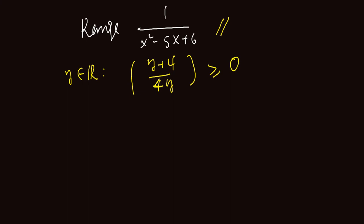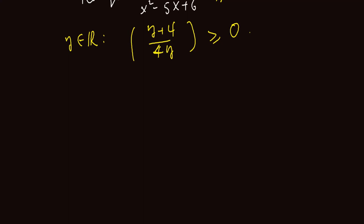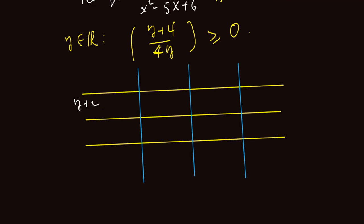As you can see, this is a square root expression, so negative numbers are not allowed inside the square root. The number in the bracket should be greater than or equal to 0. So the range of this function is all y that are elements of the real numbers such that the expression y plus 4 divided by 4 times y is greater than or equal to 0. We will use a sign table to analyze this rational expression. The numerator is y plus 4, which equals 0 at negative 4. The denominator 4y equals 0 at 0.